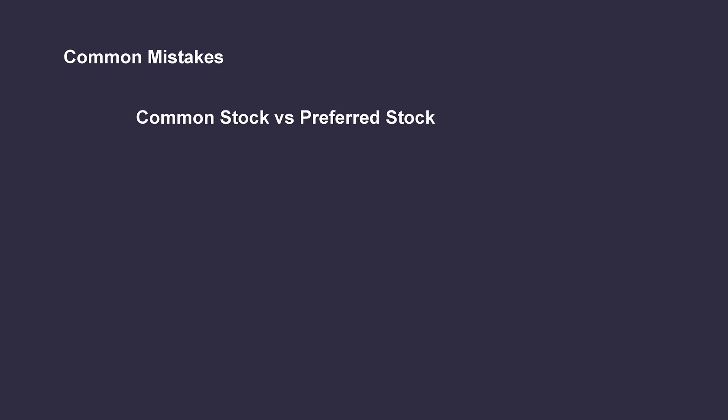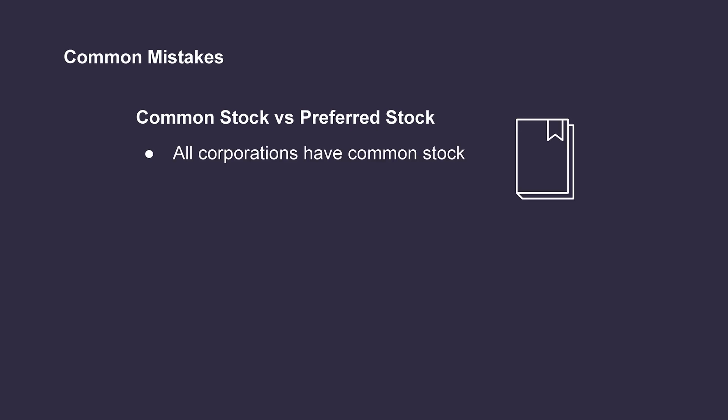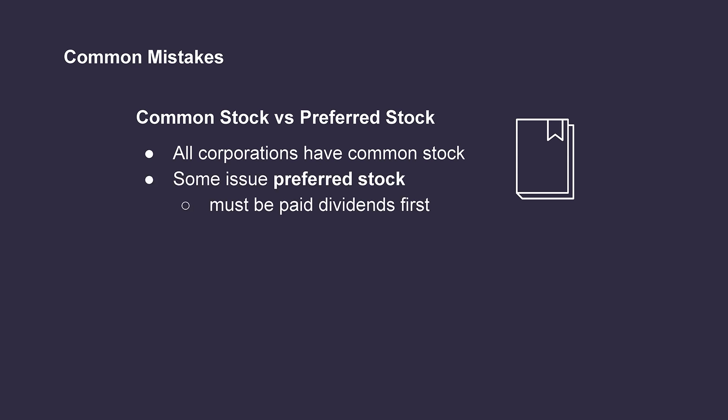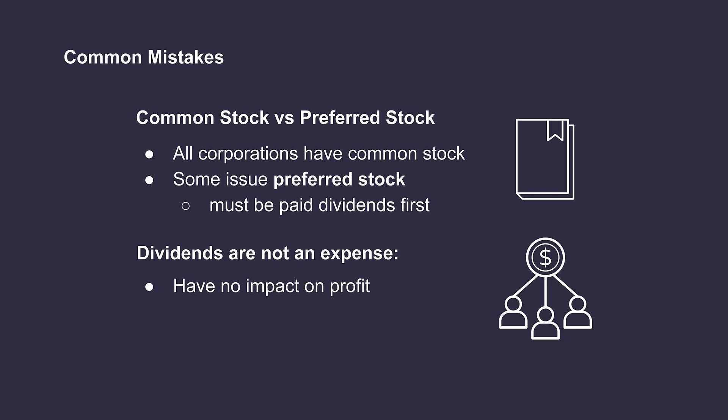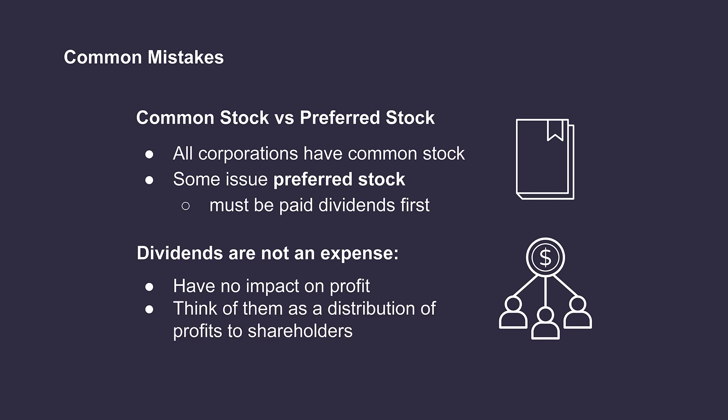Now that we understand the various forms that corporate distributions can take, we need to be aware that not all dividends are paid out equally. When it comes to shares in a company, all corporations have common stock. However, some corporations also have another category called preferred stock. Preferred shareholders are entitled to certain benefits, one of them being that they must receive their dividends before the common shareholders. Another common misconception is that dividends are an expense to the company. This is not the case, since they are not part of the company's regular course of operations and have no impact on the profit reported in the income statement. Instead of an expense, we can think of dividends as a distribution of profits to the shareholders.